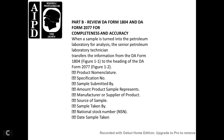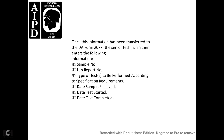Information transferred includes: product nomenclature, specification, samples submitted, amount of product, manufacturer/supplier, standard sources, sample taken by, national stock number, and date sample taken. Once transferred to DA Form 2077, the senior technician also enters: sample number, lab report number, type of test per specification, date sample received, date test started, and date test completed.